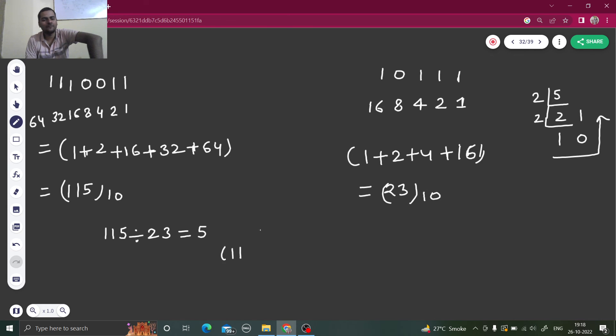So here also as you can see that 1110011 which was actually 115 in decimal system, when I divided this by 10111 which was actually 23 in decimal system, the result that I got by both the method now is 101 which is nothing but 5 in decimal system.